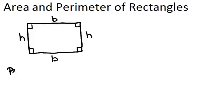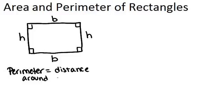In general, the perimeter of a shape is the distance around a shape. So if you imagine walking around the outside of a shape, the perimeter is how far you would have walked.